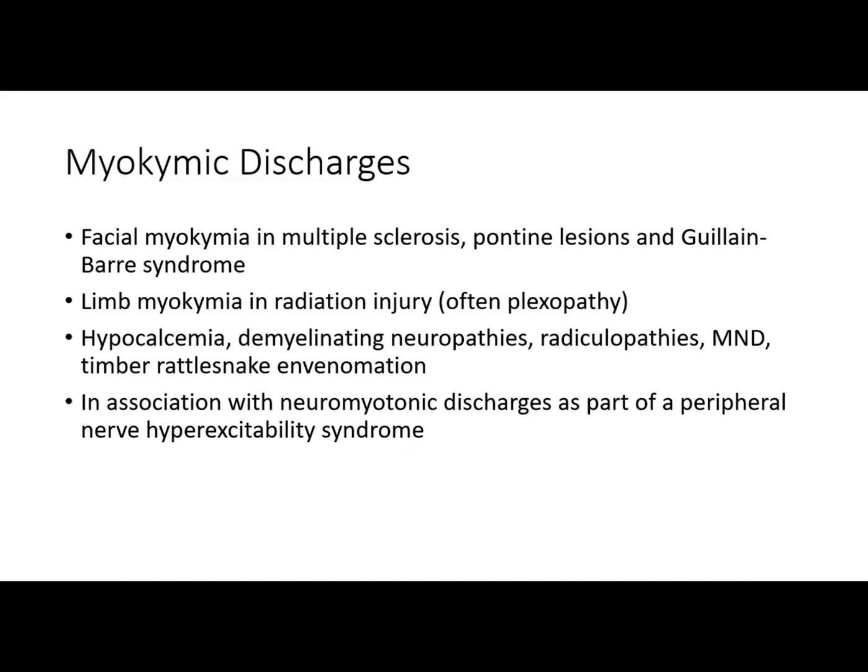Myokymic discharges can also be seen in compressive and autoimmune demyelinating neuropathies, radiculopathies, disorders of motor neurons, as a transient feature of rattlesnake envenomation, and as a generalized finding in hypocalcemic tetany. They may also be seen in association with neuromyotonic discharges as part of a peripheral nerve hyperexcitability syndrome such as Isaac syndrome.